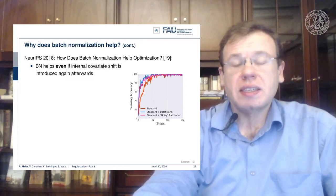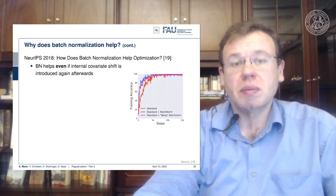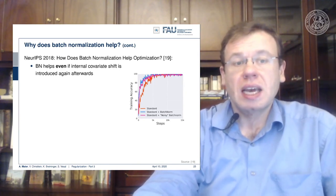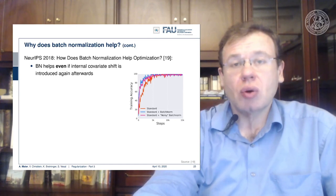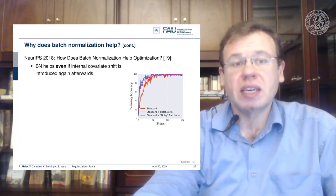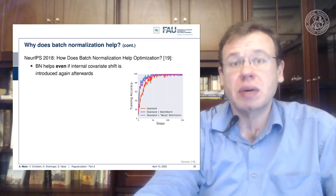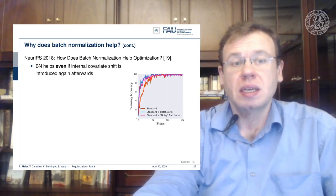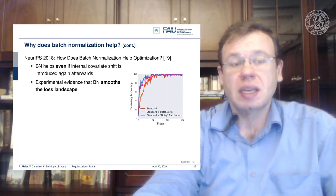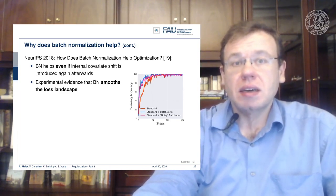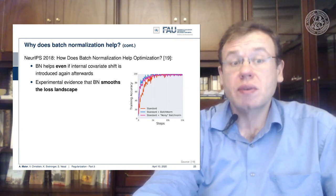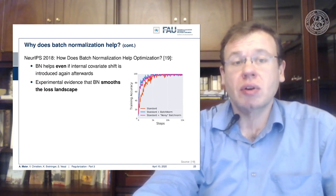On NeurIPS 2018, there was a paper on how does batch normalization help optimization. And here they showed that batch normalization is effective even if you introduce an internal covariate shift after the batch normalization layer again. So still in these situations, batch normalization helped. They could show experimentally that the batch normalization smooths the loss landscape, which is very nice for the optimization.